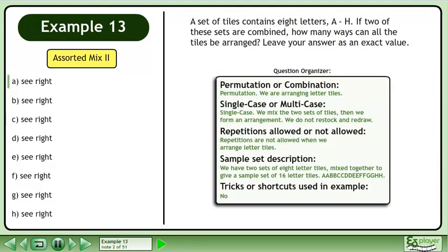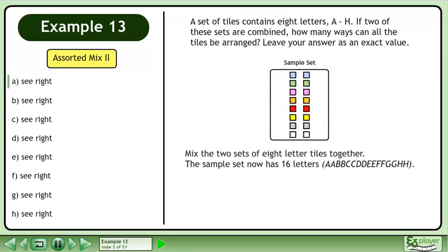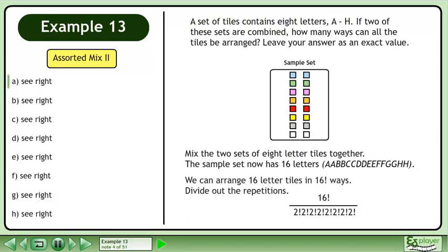Pause the video and organize the information about this question. Mix the two sets of eight letter tiles together. The sample set now has 16 letters. We can arrange 16 letter tiles in 16 factorial ways. Divide out the repetitions. The exact value answer is 16 factorial over 2 factorial to the power of 8.